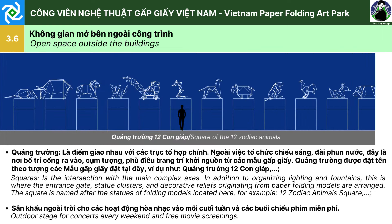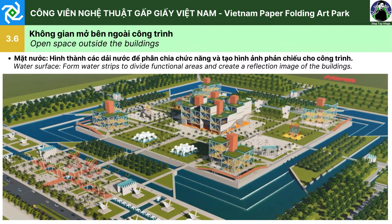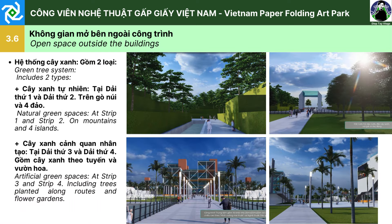3.6. Không gian mở bên ngoài công trình. Quảng trường là điểm giao nhau với các trục tổ hợp chính. Ngoài việc tổ chức chiếu sáng, đài phun nước, đây là nơi bố trí cổng ra vào, tượng, phù điêu trang trí lấy nguồn từ các mẫu gấp giấy. Quảng trường được đặt tên theo các tượng mẫu gấp giấy, ví dụ như quảng trường 12 con giáp. Phát thanh ngoài trời cho các hoạt động hòa nhạc vào mỗi cuối tuần và các buổi chiếu phim miễn phí. Tuyến đi bộ và chạy bộ dọc theo các khe núi nhân tạo tại giải không gian thứ nhất. Mặt nước hình thành các giải nước để phân chia chức năng, tạo hình ảnh phản chiếu cho công trình. Hệ thống cây xanh gồm cây xanh tự nhiên tại giải thứ nhất và thứ hai, và cây xanh cảnh quan nhân tạo tại giải thứ 3 và giải thứ 4 gồm cây xanh theo tuyến và vườn hoa.